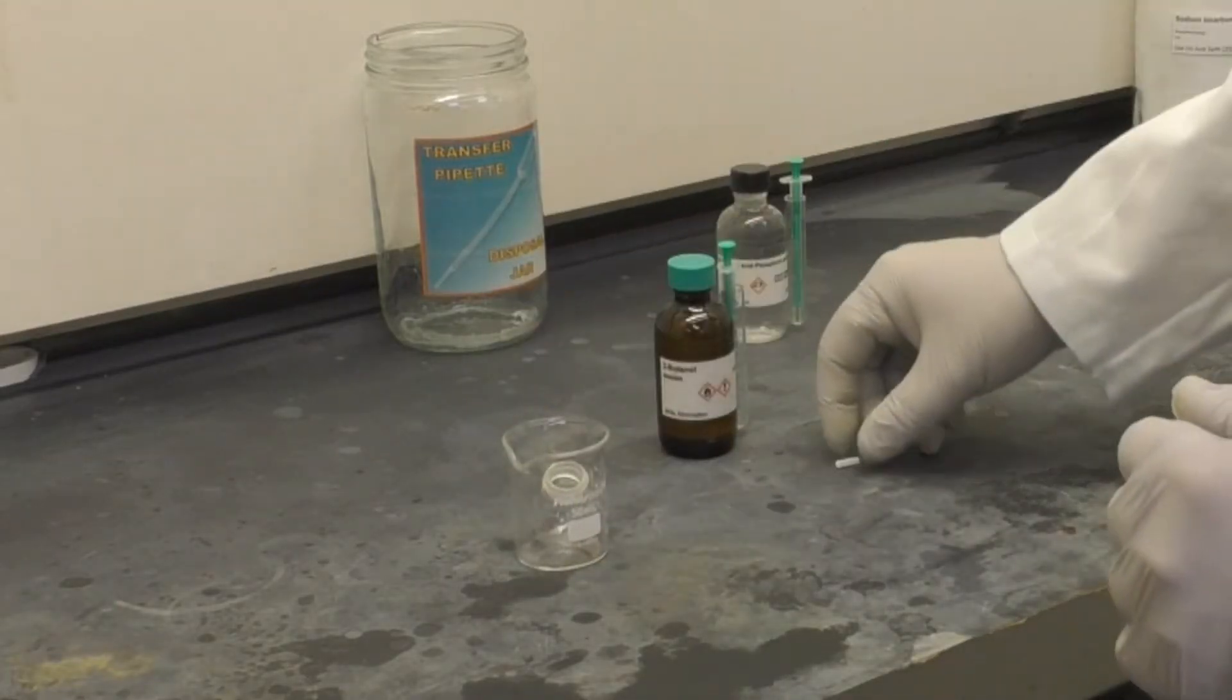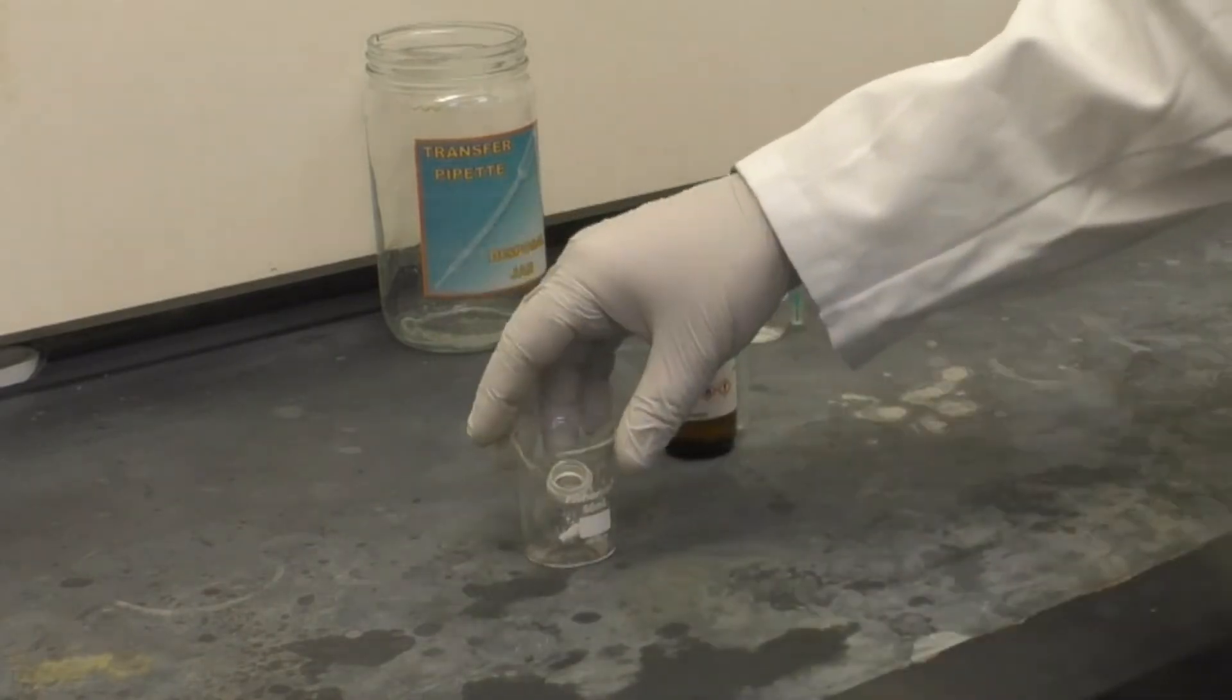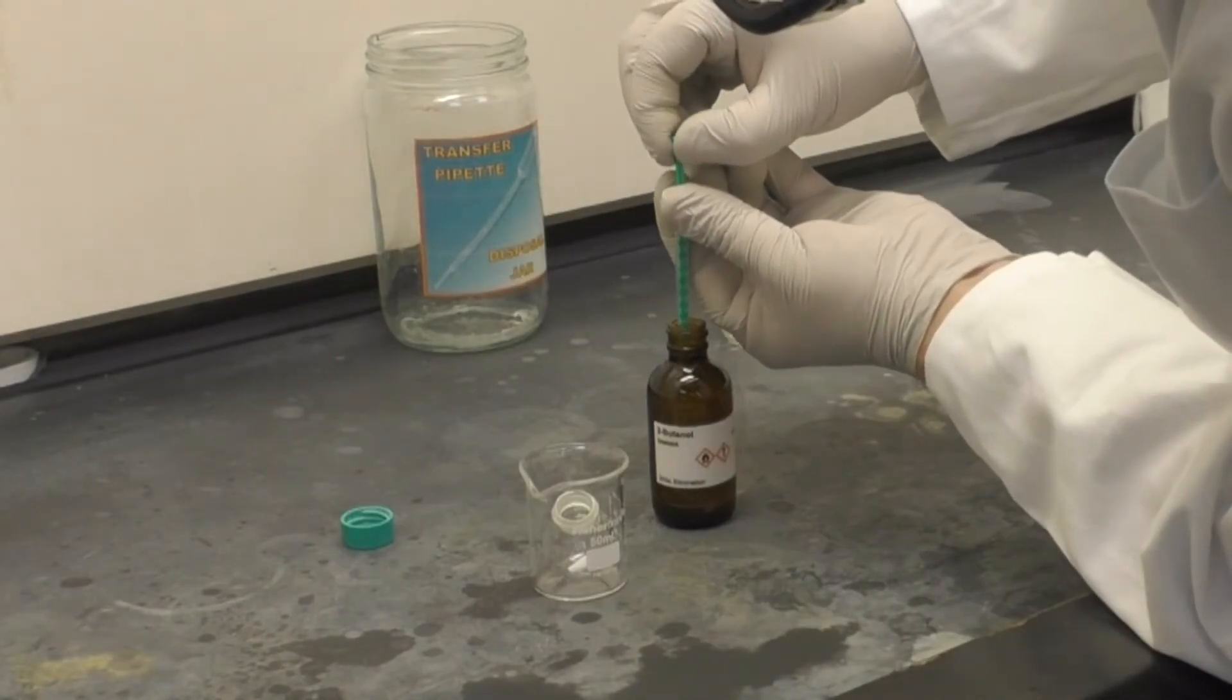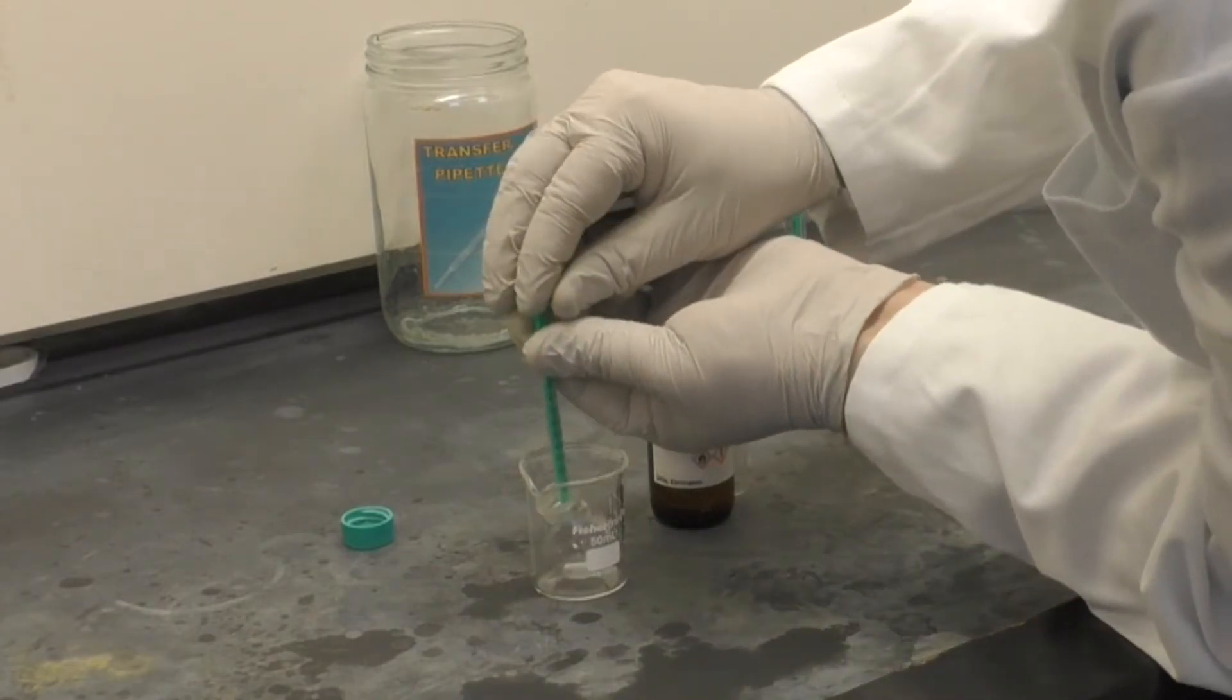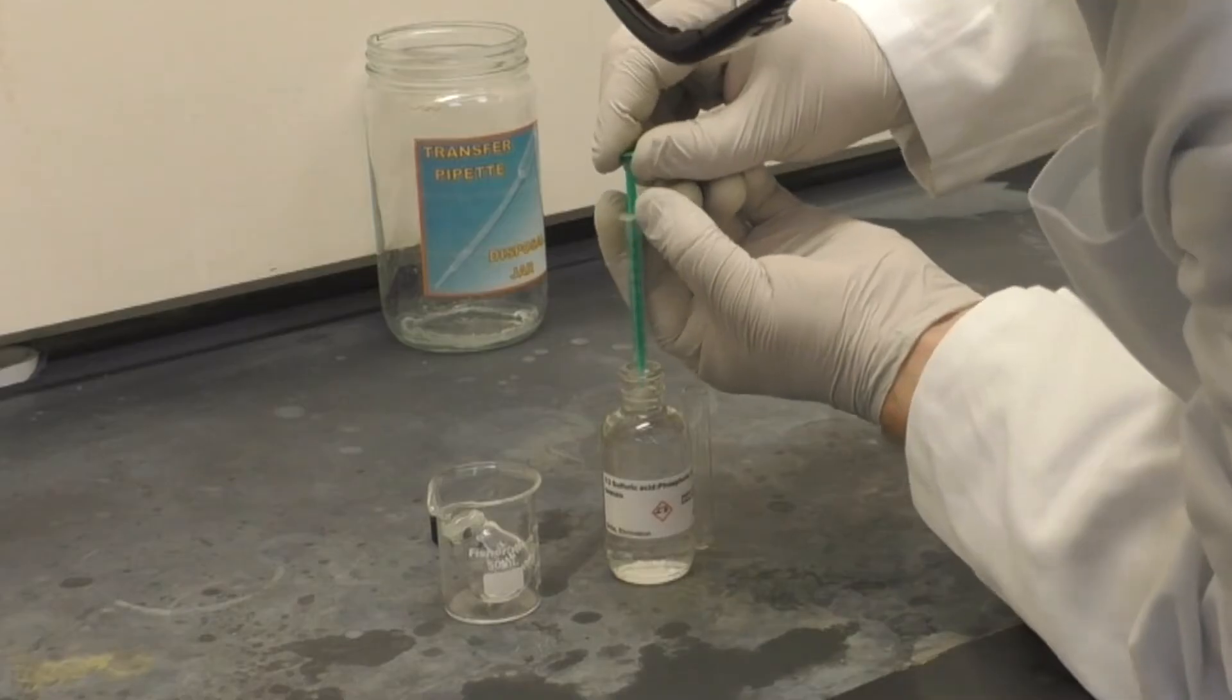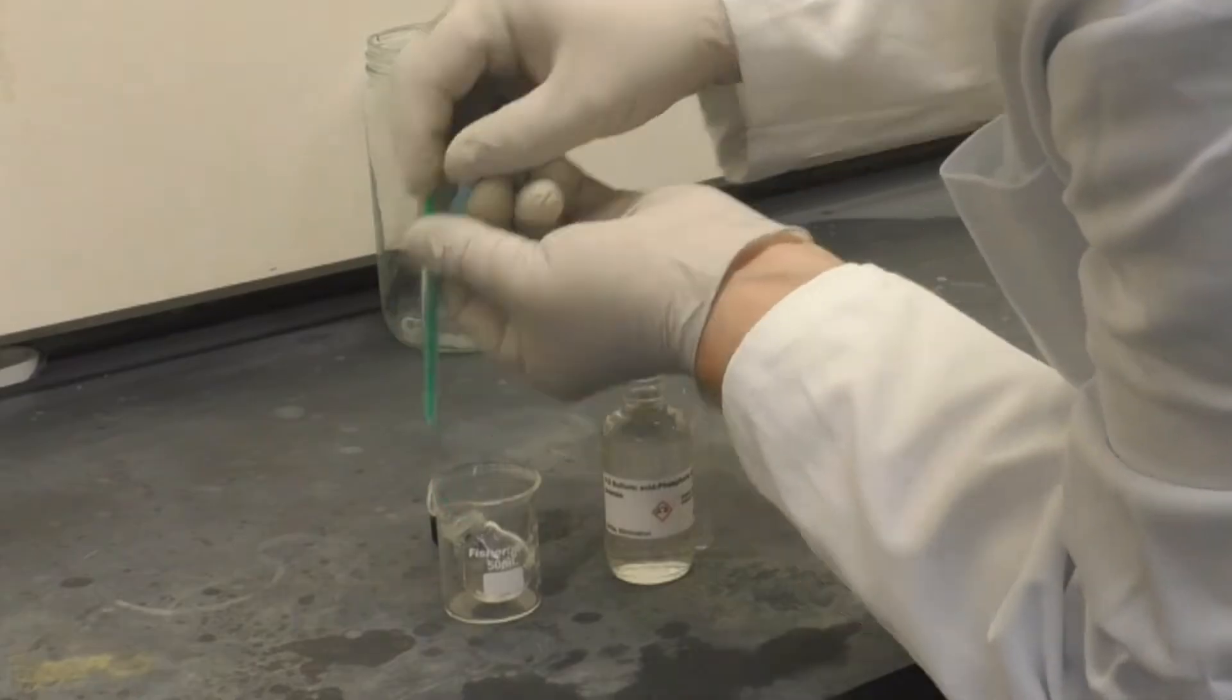Next, using a 50 ml beaker to hold your 10 ml round bottom flask, add a stir bar. Then add 0.4 milliliters of 2-butanol and 0.6 milliliters of the phosphoric-sulfuric acid mixture.